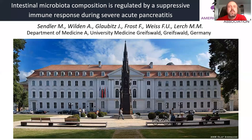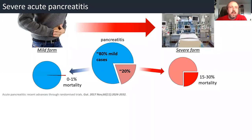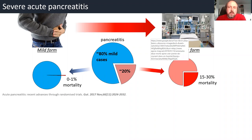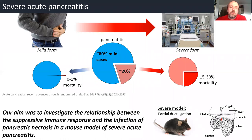Thank you to the organizers for giving me the opportunity to present our new results. Severe acute pancreatitis is a common disease. Severity depends a lot on the immune response, and one risk factor to increase the severity is the infection of pancreatic necrosis, which increases the mortality of the disease dramatically. Our aim was to investigate the relationship between the suppressive immune response and the infection of pancreatic necrosis in a mouse model of severe acute pancreatitis.